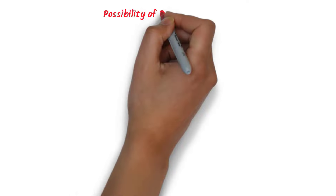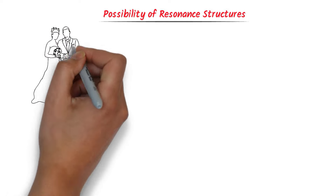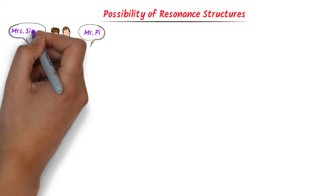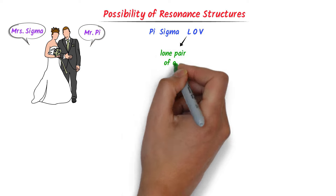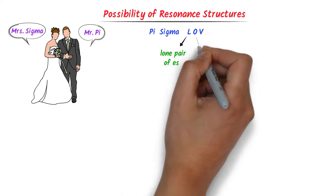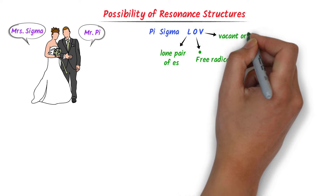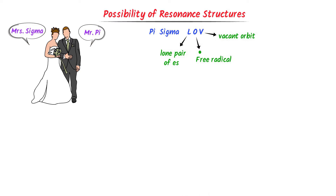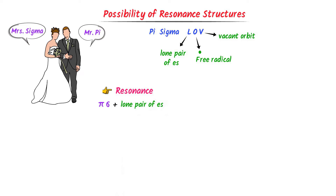Now let me teach you the possibility of resonance structures. Consider Mr. Pi and Ms. Sigma — Pi-Sigma love each other. Here, L stands for lone pair of electrons, O stands for dot or free radical, and V stands for vacant orbital. Resonance is possible if there is Pi-Sigma plus lone pair present.